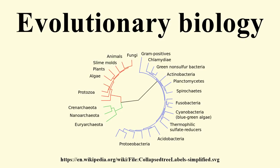Some scientific journals specialize exclusively in evolutionary biology as a whole, including the journals Evolution, Journal of Evolutionary Biology, and BMC Evolutionary Biology. Some journals cover subspecialties within evolutionary biology, such as the journals Systematic Biology, Molecular Biology and Evolution and its sister journal Genome Biology and Evolution, and Cladistics.